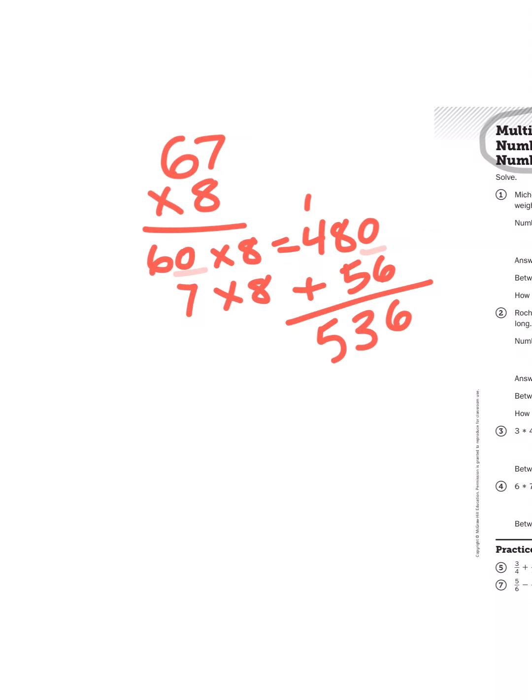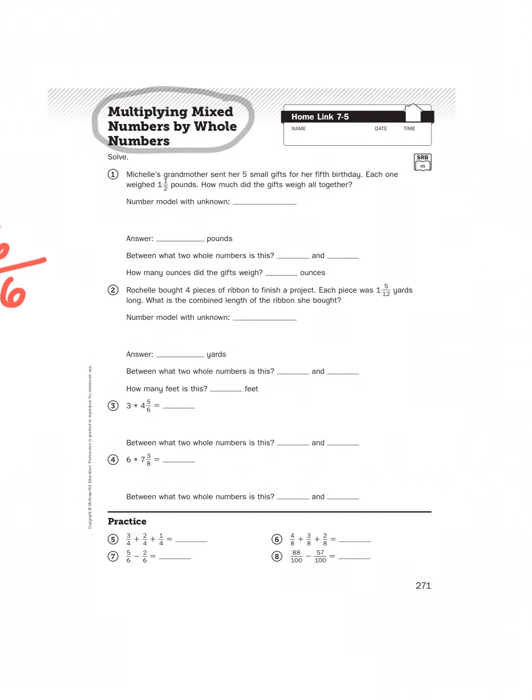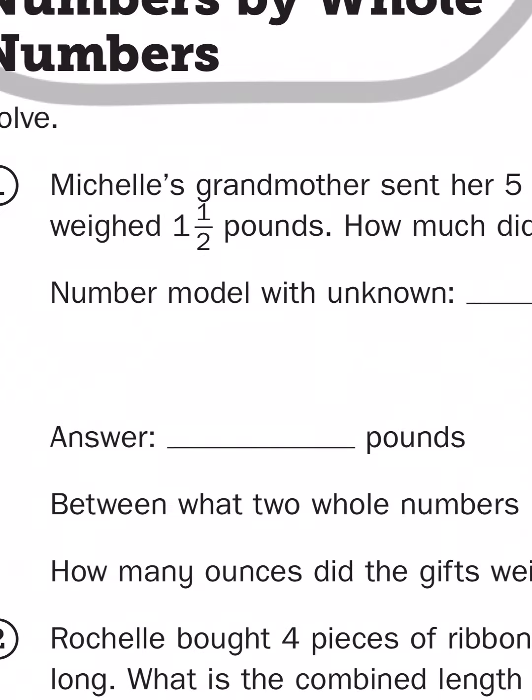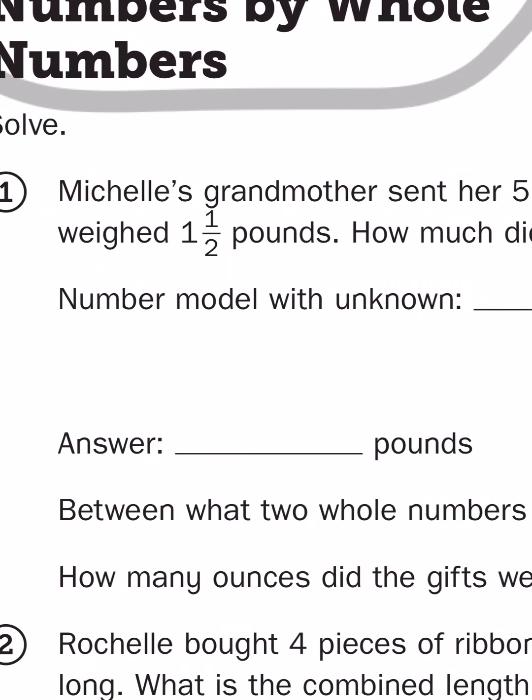Easy peasy, lemon squeezy, right? So what does that have to do with mixed numbers? Well, what is a mixed number? Well, a mixed number is just a combination of a whole number and a fraction, two different place values, just like the number 67. 67 was six tens and seven ones.